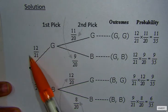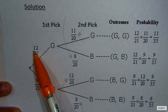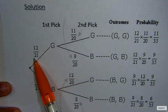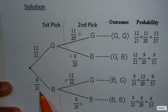The probabilities are written on the branches. There are 12 green marbles over a total of 21 marbles and there are 9 blue marbles over a total of 21 marbles.